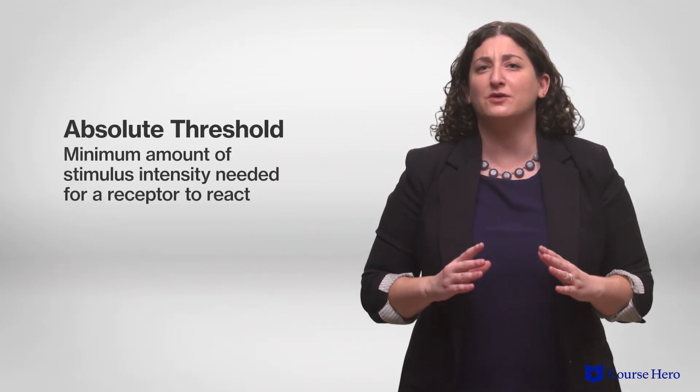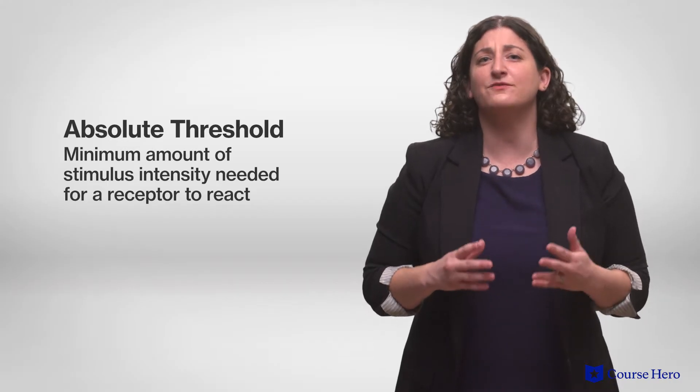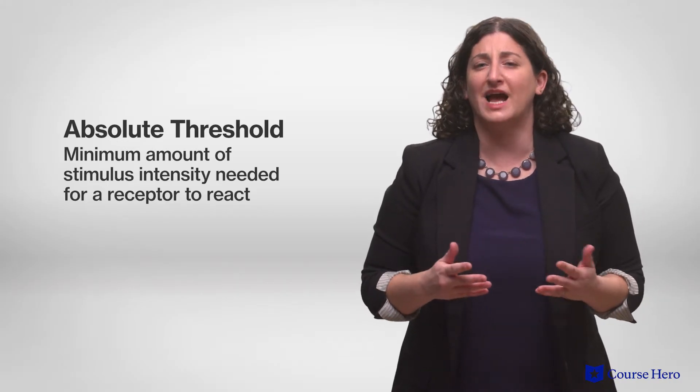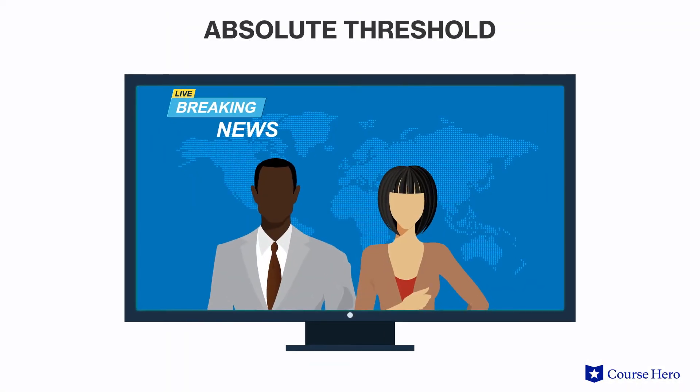Whether a stimulus is perceived depends on a number of characteristics. The absolute threshold of sensation is the minimum amount of stimulus intensity needed for a receptor to react — for example, the lowest volume of a tone that can be perceived by individuals.